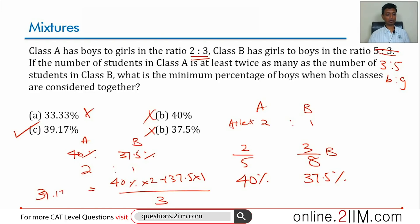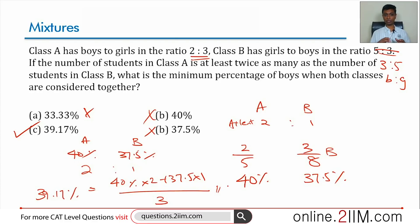This works out to 39.17%. I didn't really need to compute this because I already inferred the answer from the answer choices, but the textbook method gives exactly 39.17%. This is a good question, especially for the idea of converting fractions to percentages and using answer choices to get to the answer quickly.